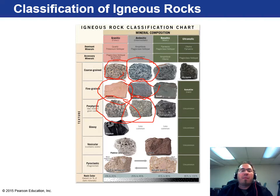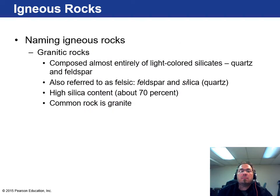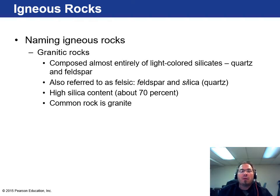Then you have the basaltic group — gabbro is the coarse grain, and basalt is very common, the fine grain basaltic mineral. You can't see the crystals in basalt. The ultramafic column is very, very rare because they form at such depth, we don't see them at the surface very often. Granitic rocks are mostly silicates — quartz and feldspars — that's why they're called felsic, a combination of feldspar and silica. Granite is the most common felsic rock.